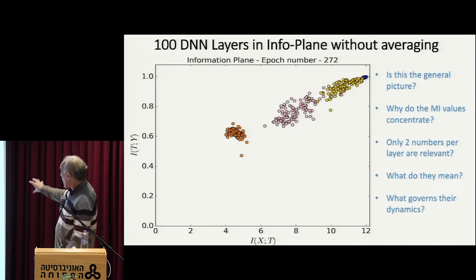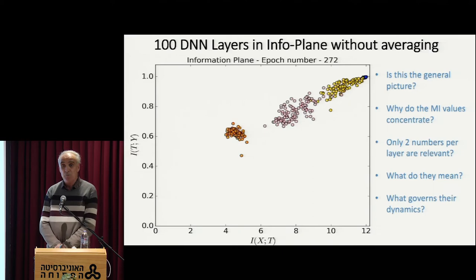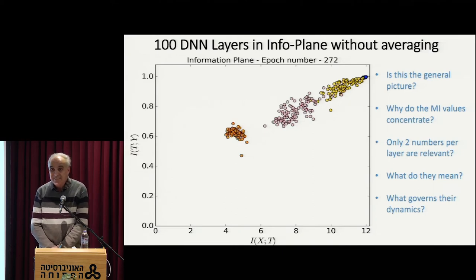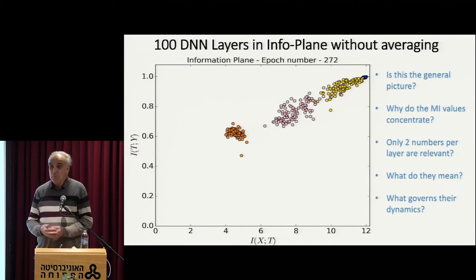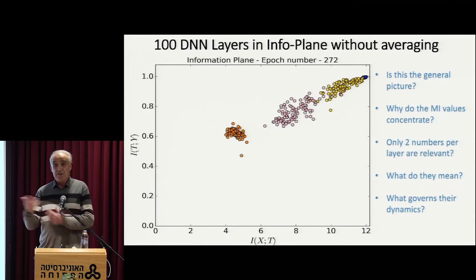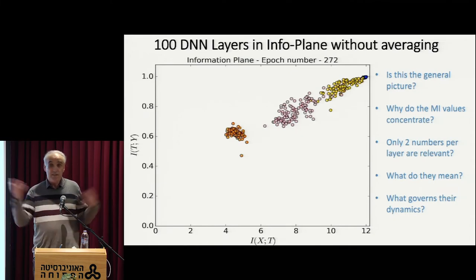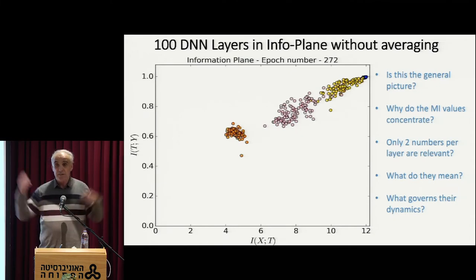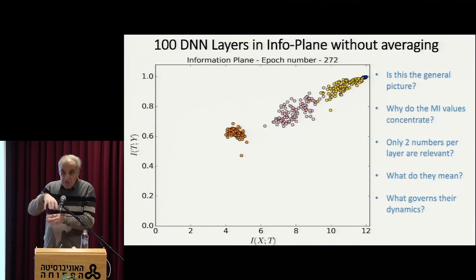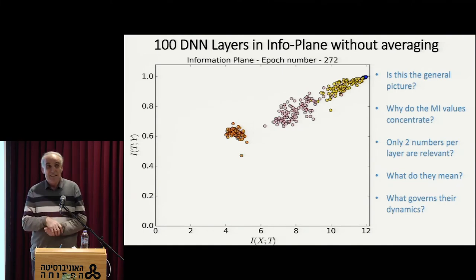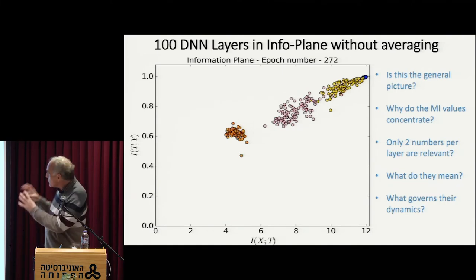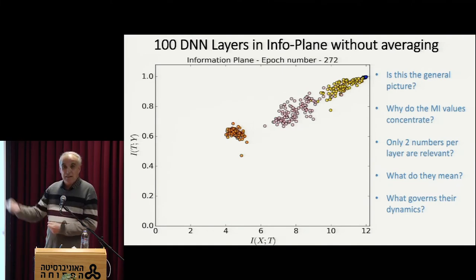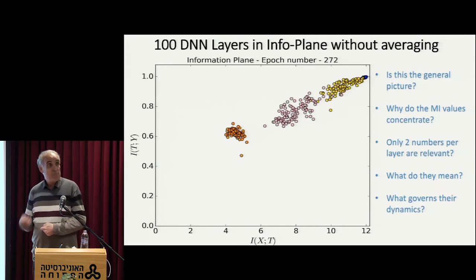Why do they concentrate? This is actually quite surprising. These are very different networks — they train on different examples, they're initialized differently, entirely differently in this space around zero. So why do they look so similar after these randomized epochs of training?